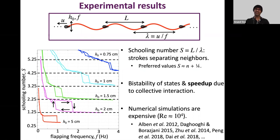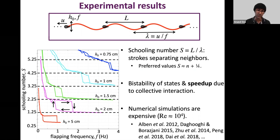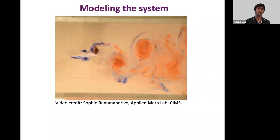This is a curious phenomenon highlighting that when flapping wings interact in a relatively fast flow — the Reynolds number in these experiments is between 1,000 and 10,000 — you can get non-trivial collective behavior with abrupt transitions between states. Part of the difficulty in understanding this is that numerical simulations are expensive at high Reynolds number, particularly with a large number of bodies. So we take a different approach and try to develop a conceptually simple model for the collective behavior of flapping wings.